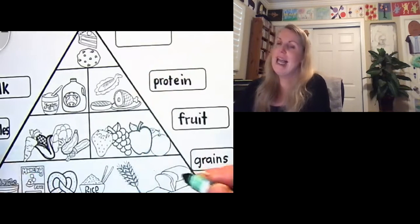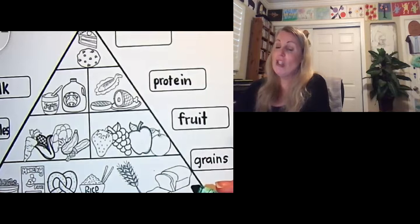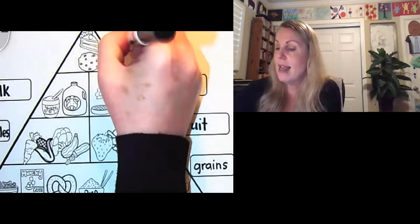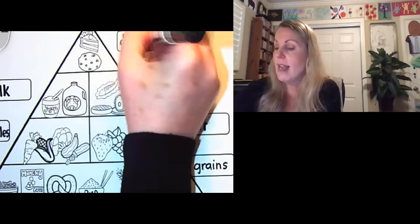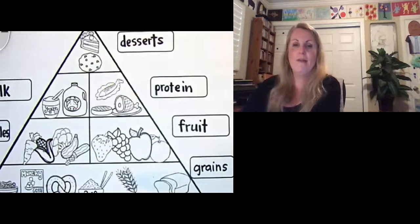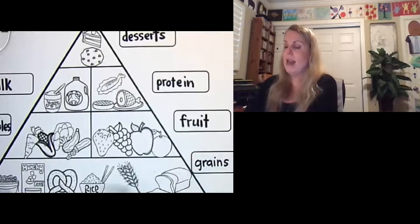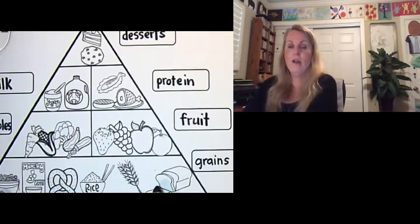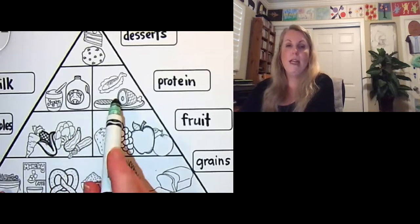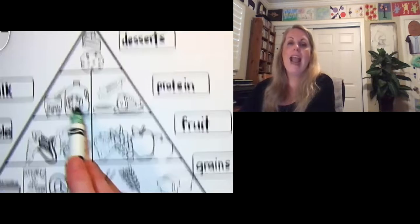And our last one are kind of our desserts and fats, right? D-E-S-S-E-R-T-S. Even though we love it, this is what we should have the least of. So say with me again, grains, fruit, vegetables, protein, milk, and desserts.